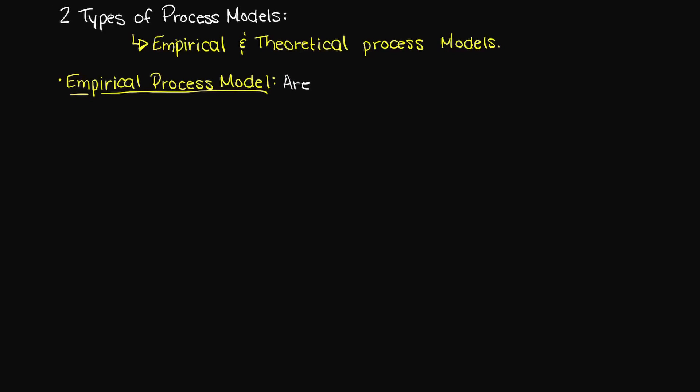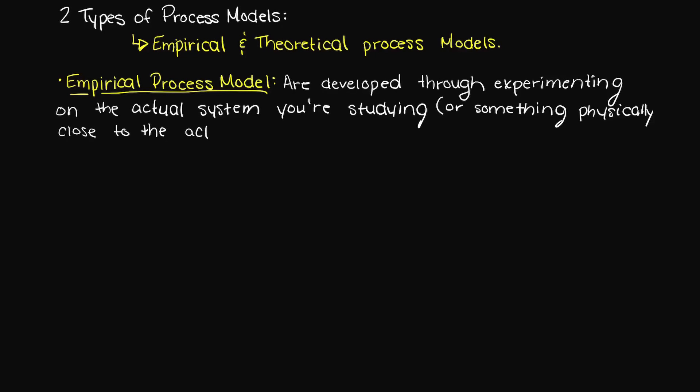Let's begin with what an empirical process model is. Empirical process models are developed through experimenting on the actual system or something physically close to the actual system. So our data for our process model is coming from an actual experiment we would perform.